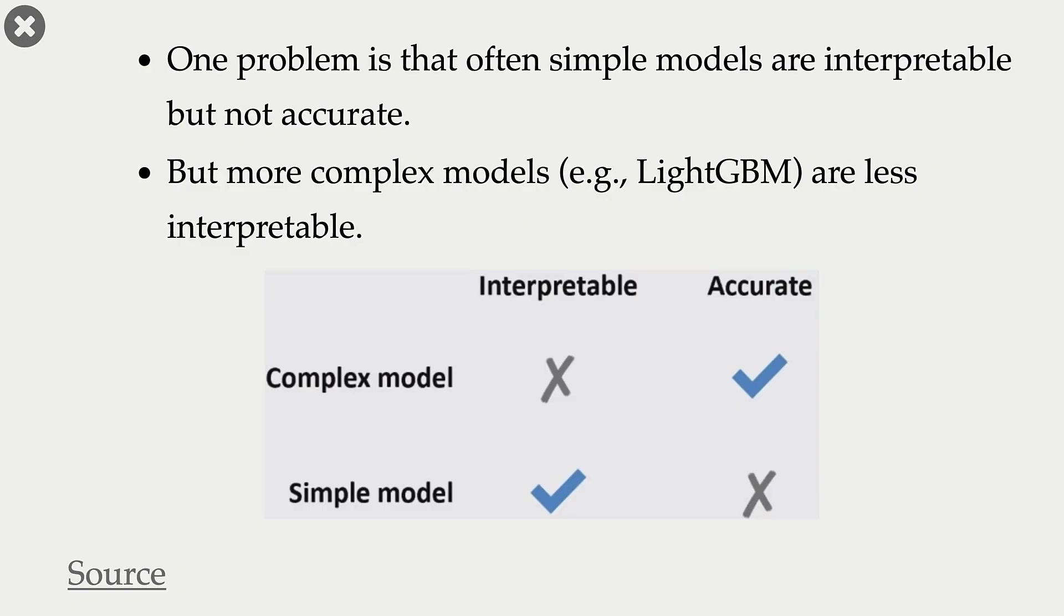Okay, so the problem in general is that often simple models are interpretable but they are not that accurate. And more complex models like LightGBM or XGBoost in our case, they are less interpretable but they are more accurate. So usually complex models are more accurate but less interpretable, and simple models are more interpretable but less accurate.